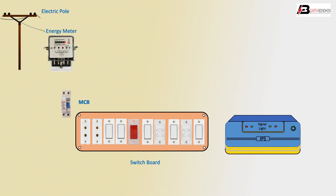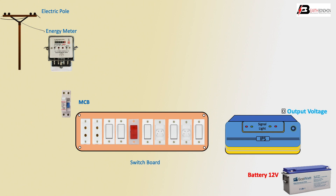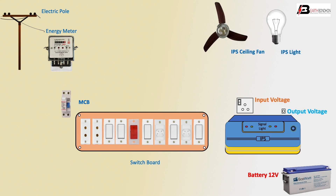IPS means inverter — it converts low voltage to high voltage for the full system. Using a battery at 12 volts, you can use 100 ampere, 400 ampere, or 50 ampere — use anything based on load calculation. In the IPS connection, the IPS outgoing voltage goes to the board connection, and input voltage means the PDP line electric input to IPS connection, for IPS light or IPS ceiling fan.